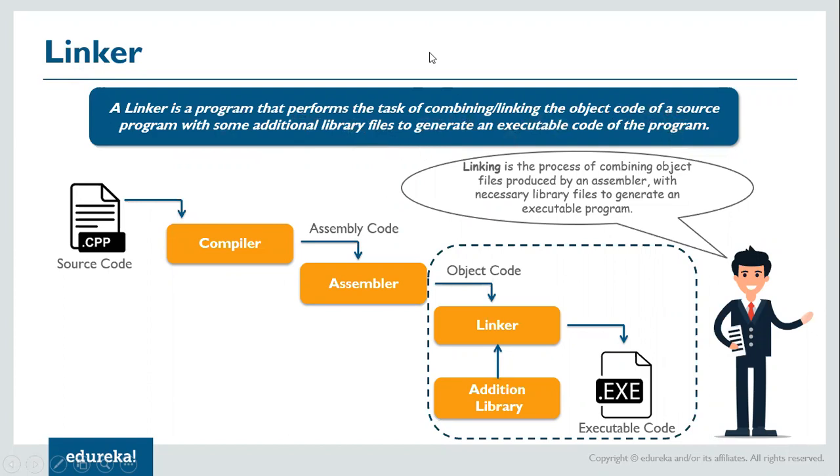If you will look at this, you have initially source code, you compile it and it will generate assembly code. Then there is an assembler which converts into object code. Now linker, what it does is it links your object code with additional code from the library. So if this code which you created had made use of some libraries, it will link that program.